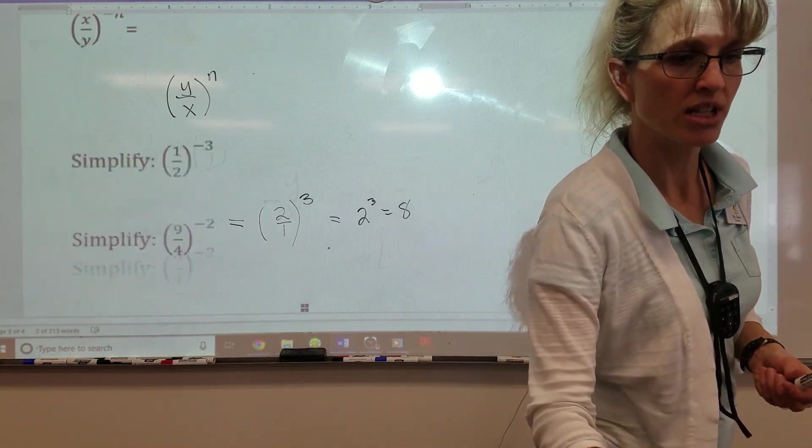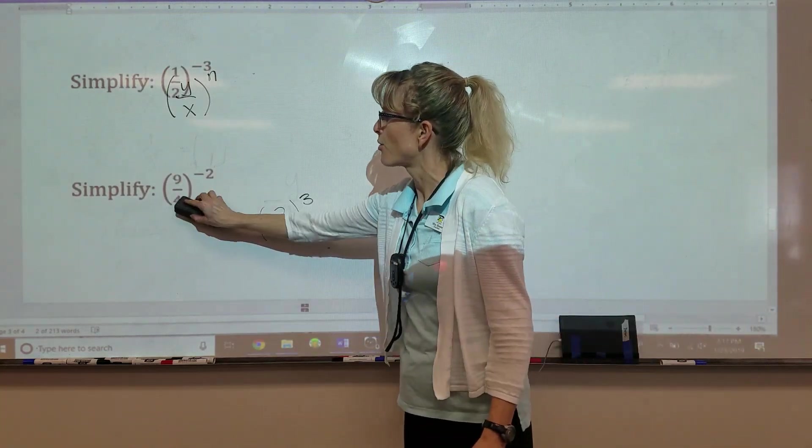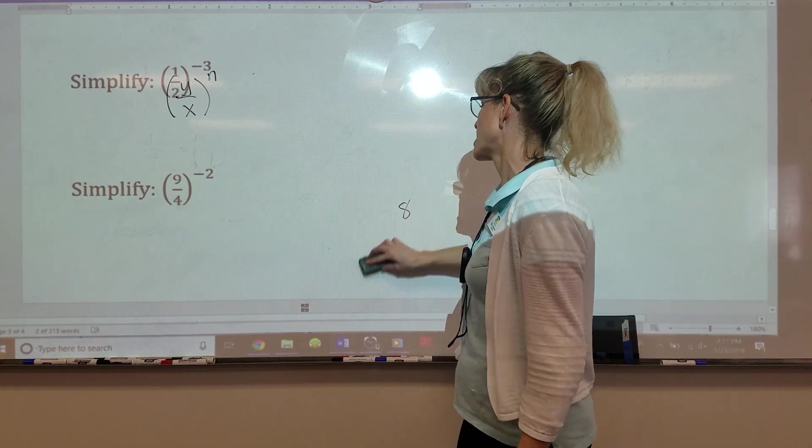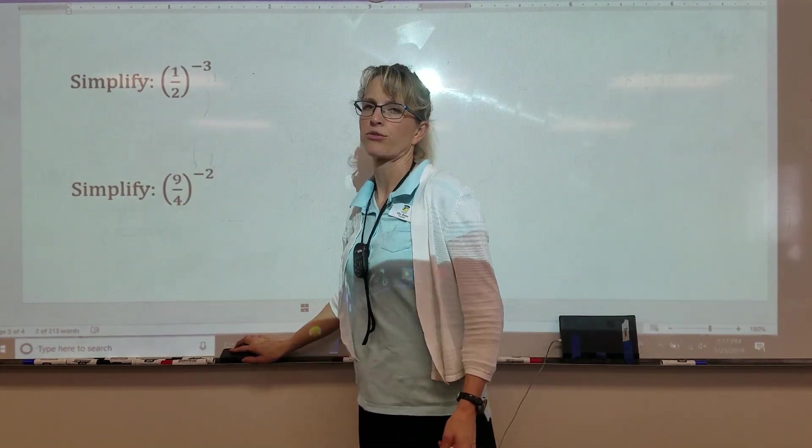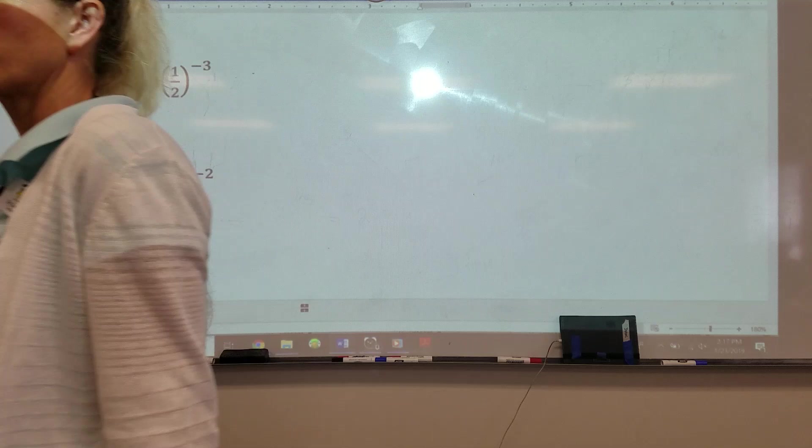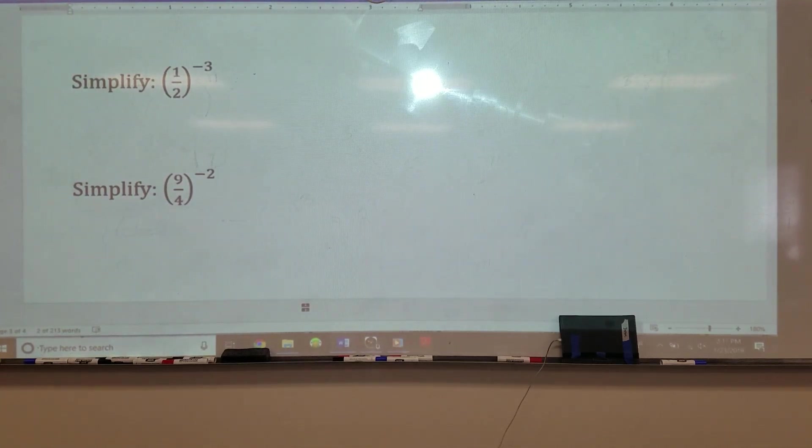You get to do the next one. It is nine-fourths to the negative two exponent. So remember, your first step is to take the reciprocal. Your second step is to change the exponent. As soon as you've got it, put your pencil in the air. Oh, second one right here.